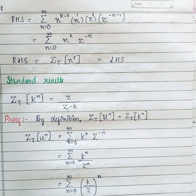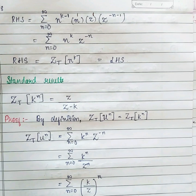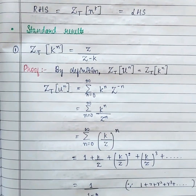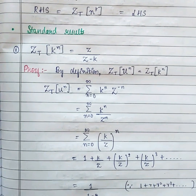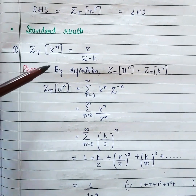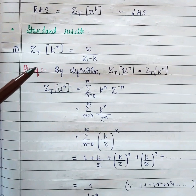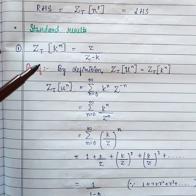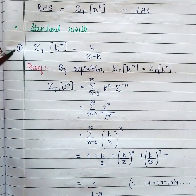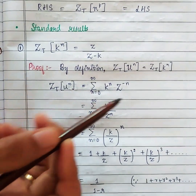So this is the first property: Z{n^k} = minus z times d/dz of Z{n^(k−1)}. Now we will have some standard results and formulas that we will frequently use. The first one is Z{k^n} = z/(z − k). This is the first formula, and we are going to prove it. The general formula is Z{u_n} = summation n=0 to infinity of u_n times z^(−n).